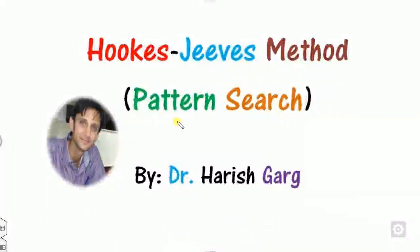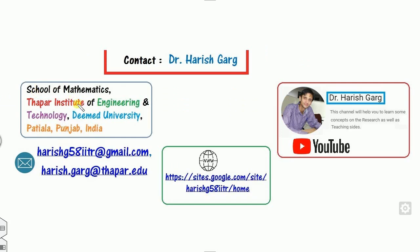Hello everybody, myself Dr. Gurk. Today we are talking about a new method for solving the unconstrained optimization problem, known as the Hooke-Jeeves method. It is also called the pattern search method. I am working in the School of Mathematics. If there is any doubt in this video, you can contact me through my email, my website, or my channel.